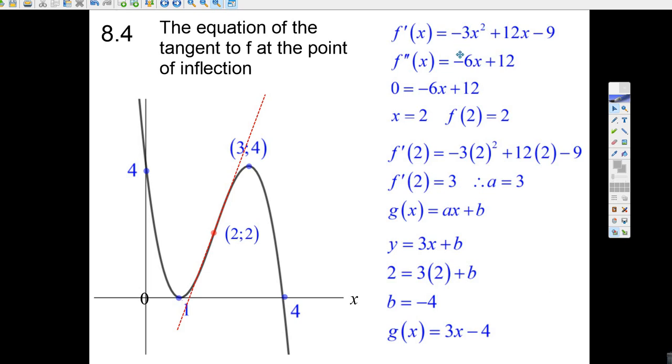We go 2 times minus 3. There's the first minus 6x plus 12. Then we make it equal zero. We add 6x, divide by 6, x is 2.